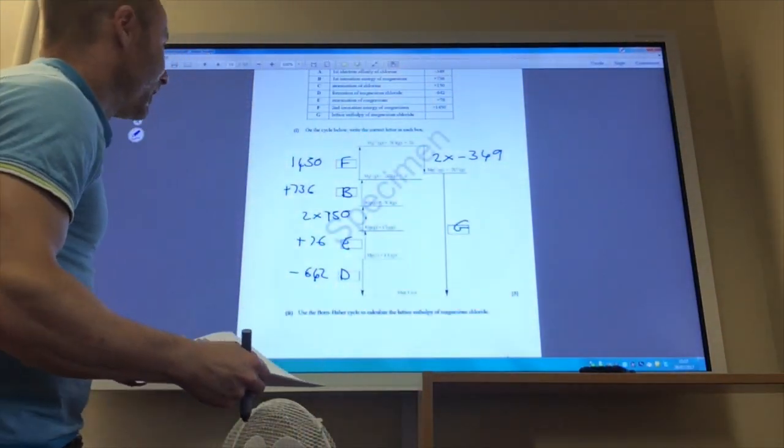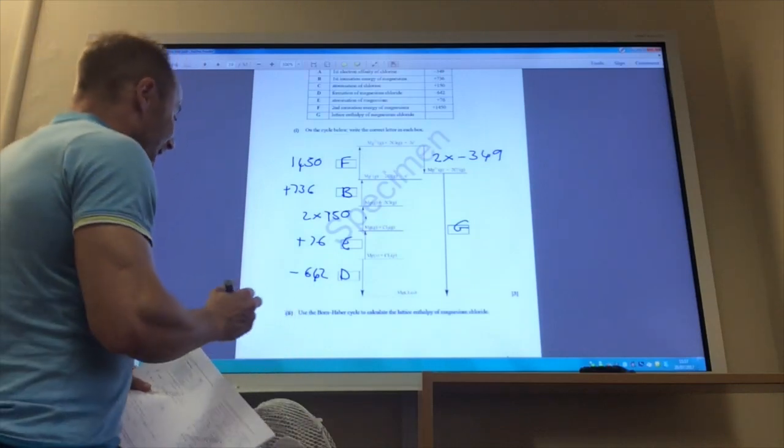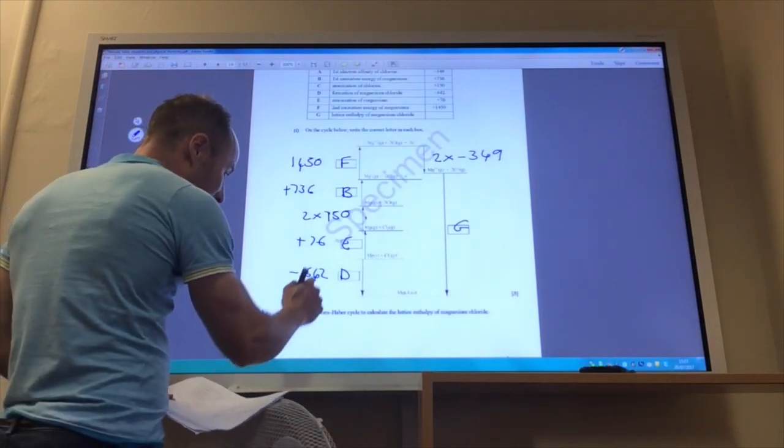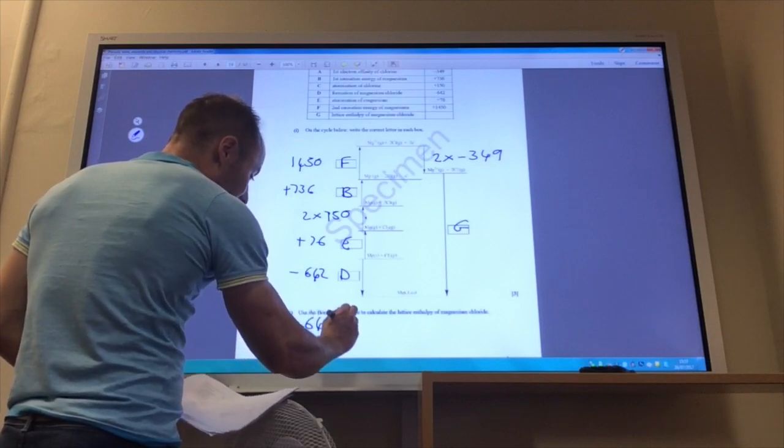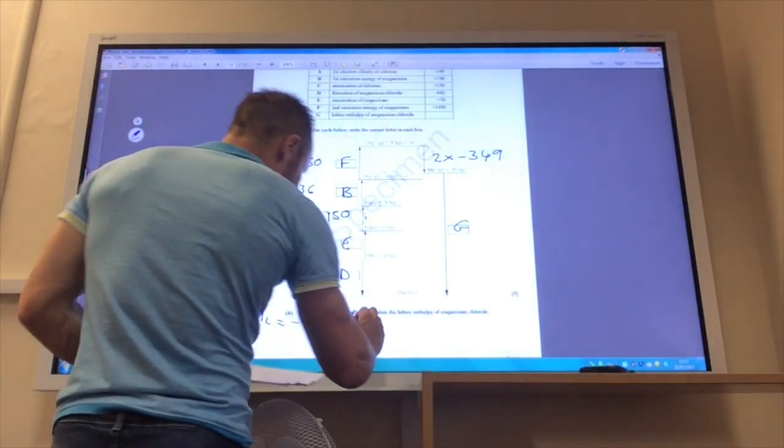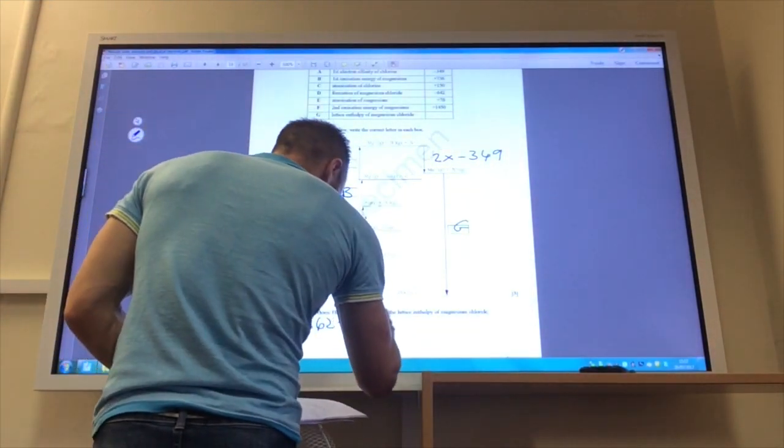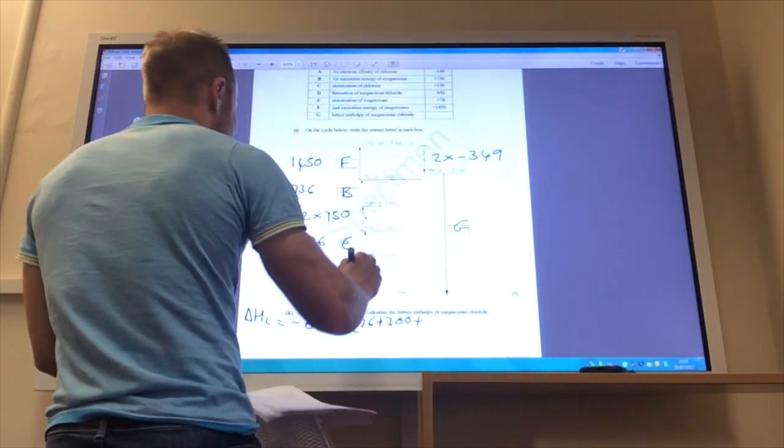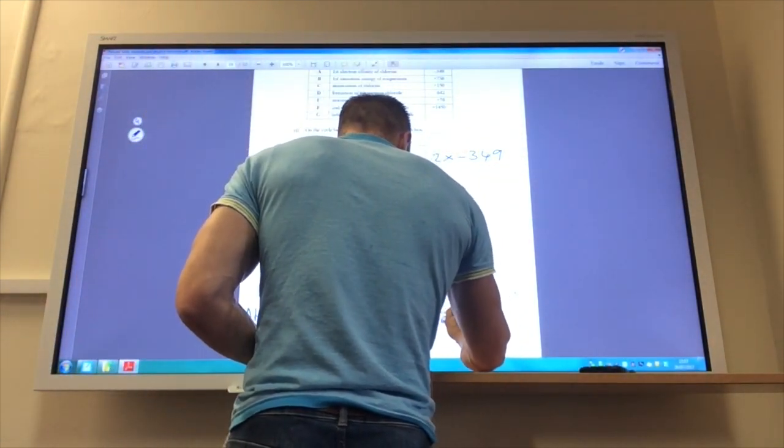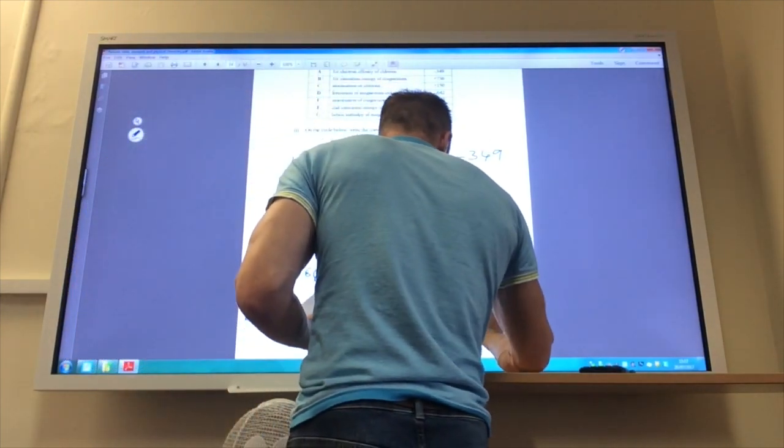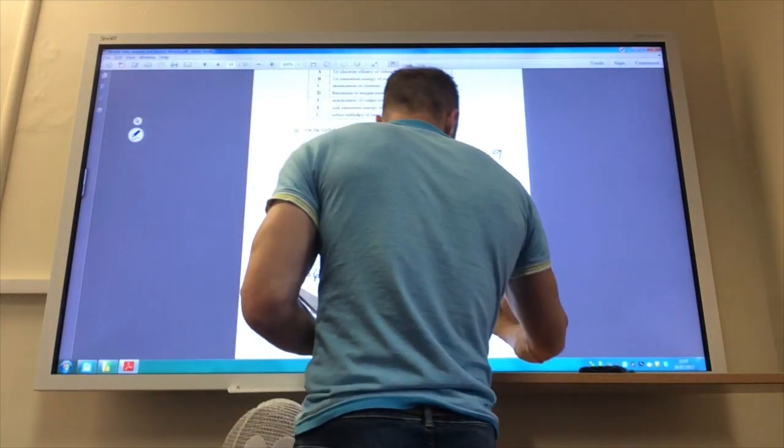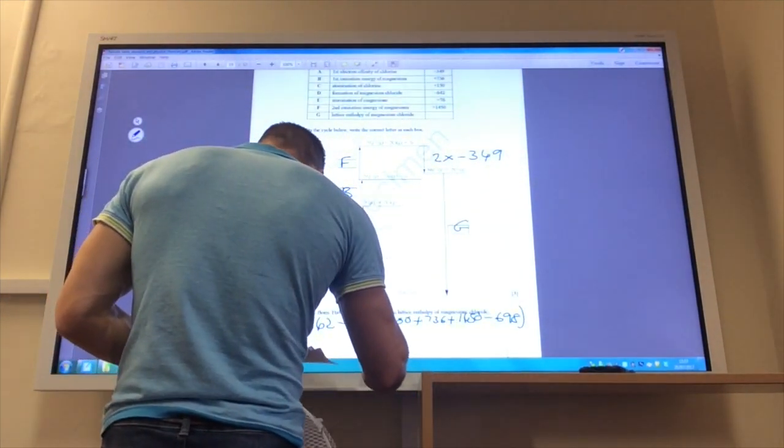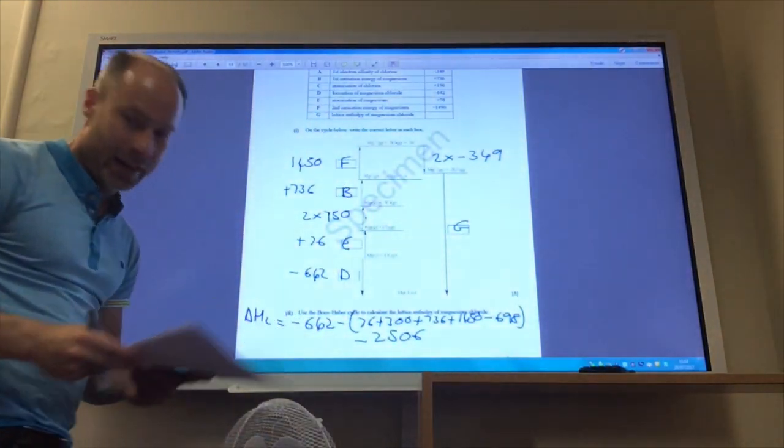And finally, this is the lattice enthalpy, which is what I'm trying to find out. OK, and then you need to know the equation that the lattice enthalpy, delta HL, is equal to your enthalpy of formation minus everything else. So you just add all these numbers up, so 76 plus, this is going to be 300, plus 736, plus 1450, minus 698, for that. And if you do all of that, you should come to minus 2506 kilojoules per mole.